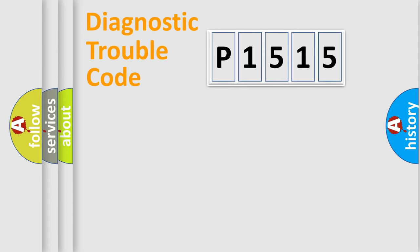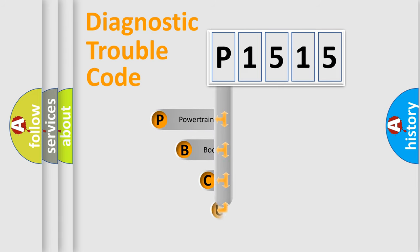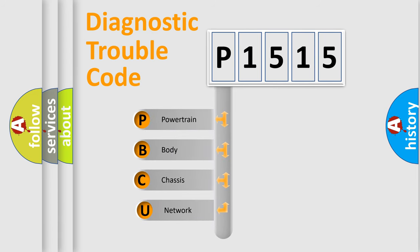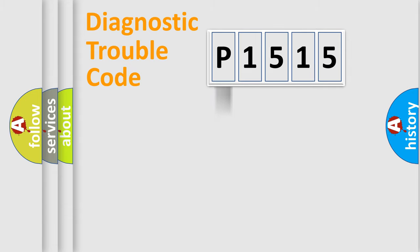First, let's look at the history of diagnostic fault code composition according to the OBD2 protocol, which is unified for all automakers since 2000. We divide the electric system of the automobile into four basic units: Powertrain, Body, Chassis, and Network.